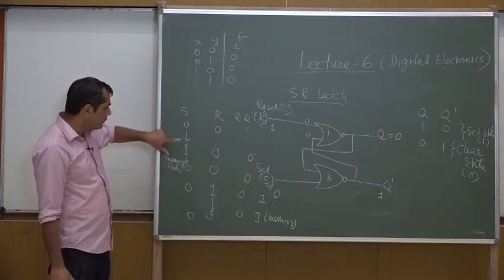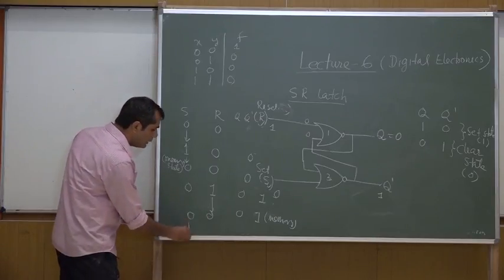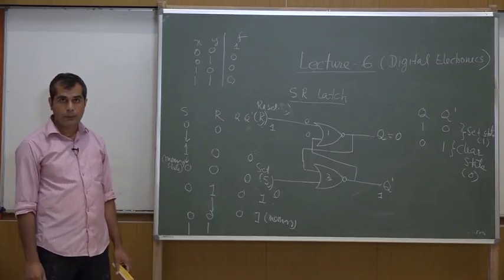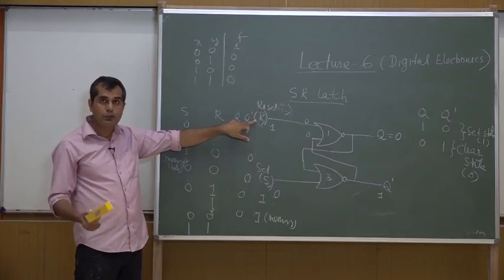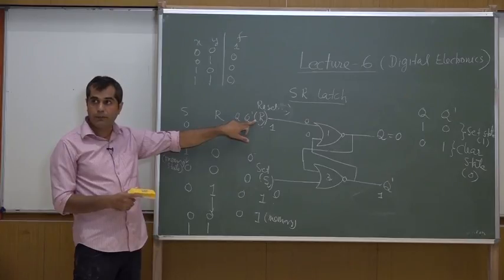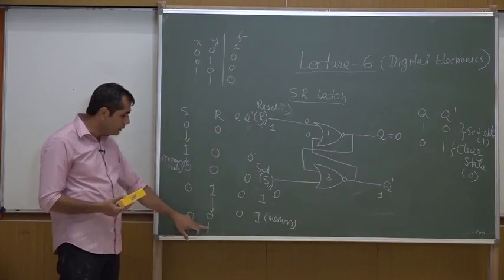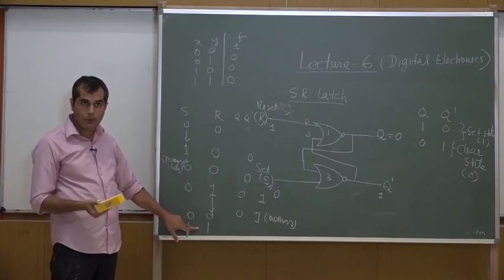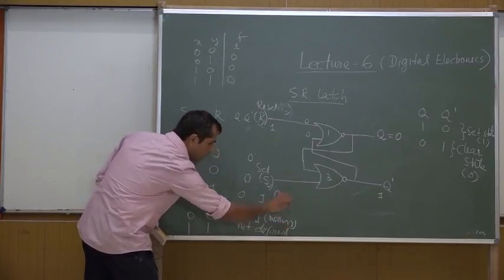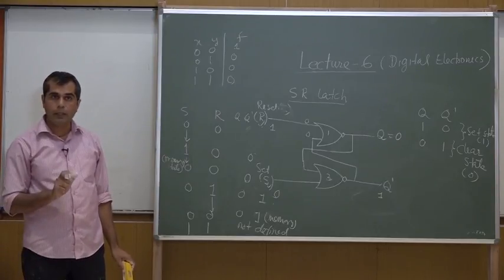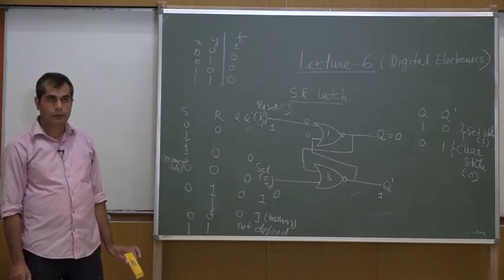If both inputs are S=1, R=1, both Q and Q' become 0 simultaneously. This is not a desirable state for the SR latch, so we design the circuit to discard this condition — it is placed in a don't-care condition. The 1,1 input combination will never be used for this SR latch.